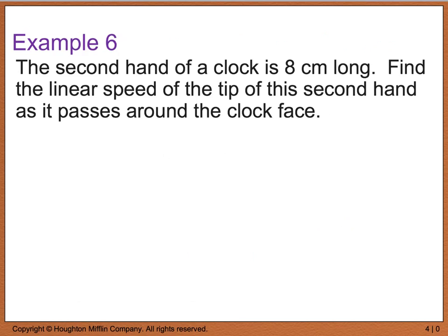It says the second hand of a clock is eight centimeters long, and we want to find the linear speed of the tip of that second hand as it passes around the clock's face. Now, we were given that linear speed, which was v, was equal to s divided by t. s is our arc length, and t was our time. So, we have to identify, were we given an arc length, and were we given a time?